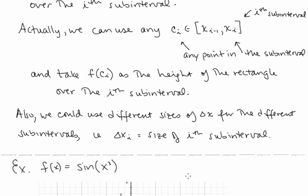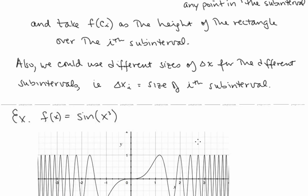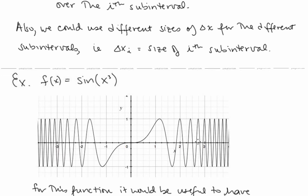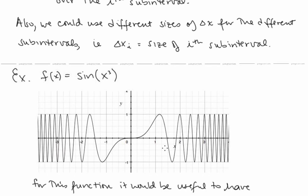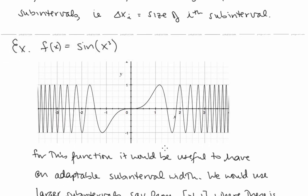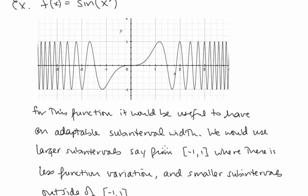Also, we could use different sizes of delta x for different subintervals, calling it delta x i as the size of the i-th subinterval. For example, for f of x equals sine of x to the third, it would be useful to have an adaptable subinterval width.